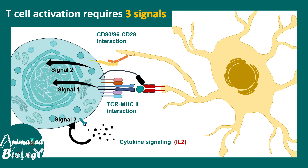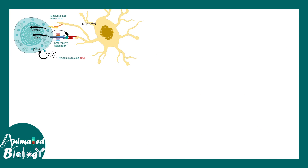Interleukin-2 binds to specific interleukin receptors and gives rise to Signal 3 for activation. Thus, a combination of these three signals leads to the activation of T-cells.